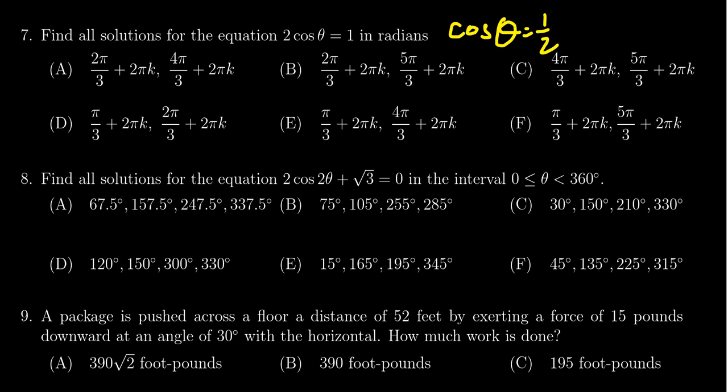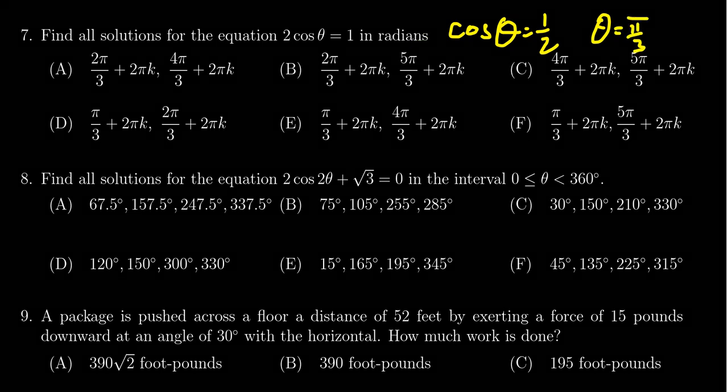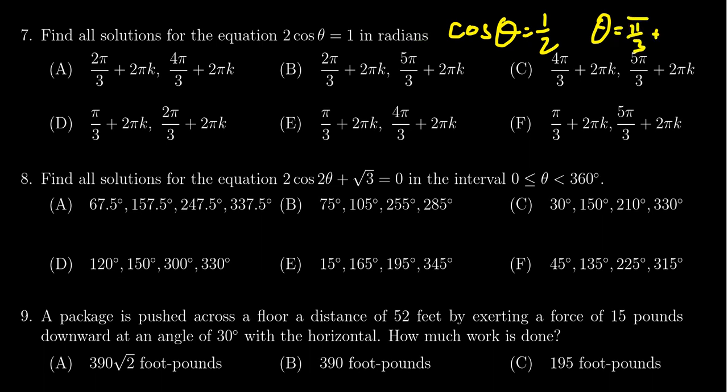Cosine equals 1 half will happen in the first quadrant and in the fourth quadrant. Here's the unit circle, x equals 1 half would be something like that. In the first quadrant, this happens, thinking of radian measure, at pi thirds. But this will also happen for any multiple of 2 pi we add to that, so we get 2 pi k. We can already eliminate some of the answers based upon that.